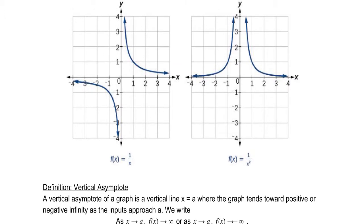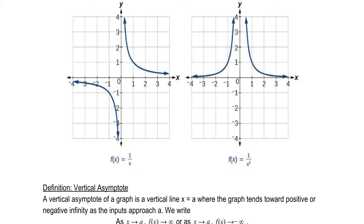On the reciprocal function, as the x values approach 0, f of x goes to infinity. Similarly, as the x values approach from the left side of 0, the outputs approach negative infinity. So we have a vertical asymptote, and we generally draw a dashed line to indicate the function does not attain that value. Vertical asymptote: x equals 0.